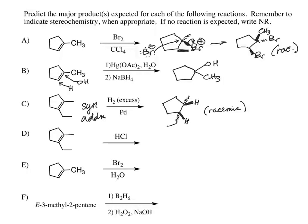In our next example, we're adding HCl across the pi bond. Normally we would expect Markovnikov addition, where the hydrogen goes to the carbon with more hydrogens. But in this case, neither of the carbons have hydrogens. The rationale behind Markovnikov's rule is you want the most stable carbocation possible, but if I protonate at either position, I'm going to get a tertiary carbocation. I can either protonate at the top carbon or the bottom carbon — they're both tertiary, so they're equally stable, and if I have two equally stable carbocations, I expect them both to be formed.